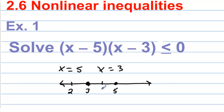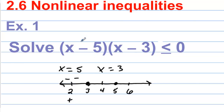Let's test 2, how about 4, and we'll test 6. When we plug 2 in for the x values, 2 minus 5 is negative and 2 minus 3 is negative. So anything less than 3 will have a positive value when we plug in for x.